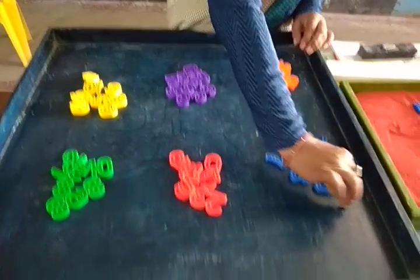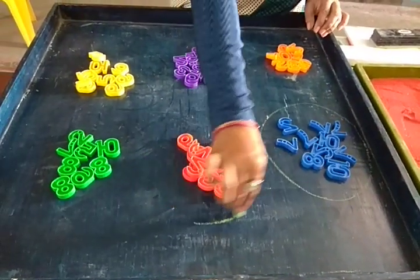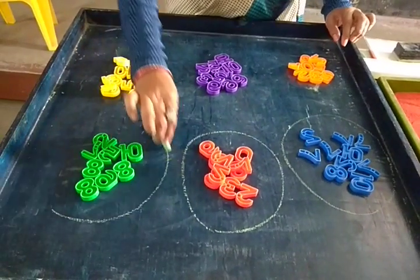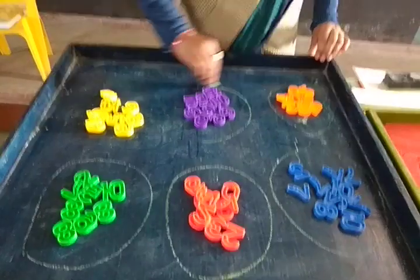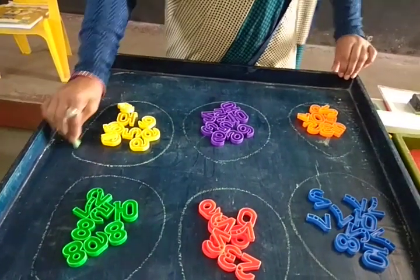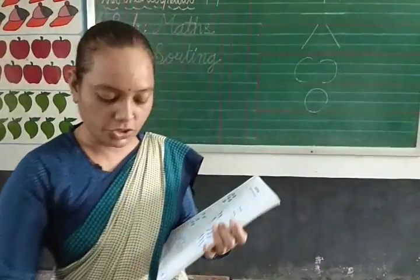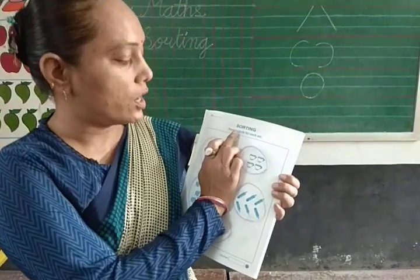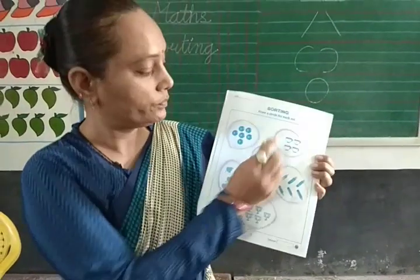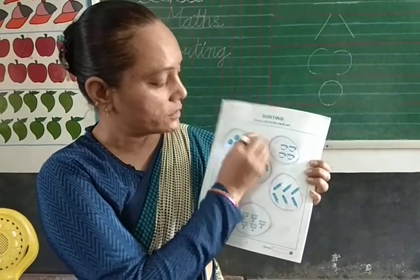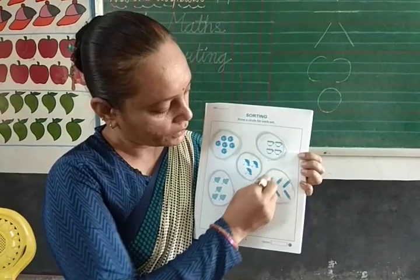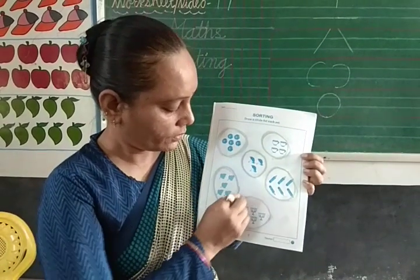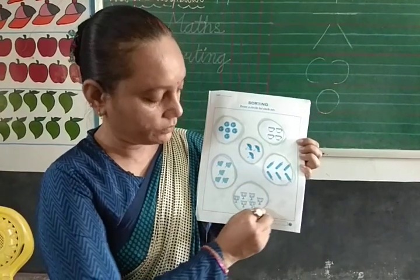Now do here circle. I request to all the parents: how to teach sorting activity in the worksheet — draw a circle for each set. Circle, circle, circle, circle, circle, circle. Thank you.